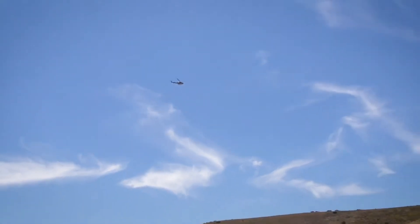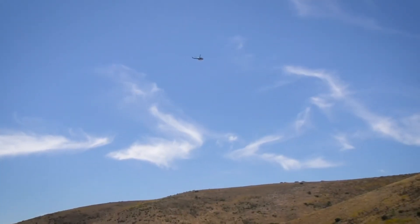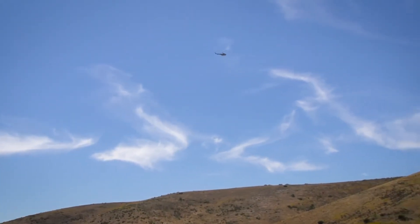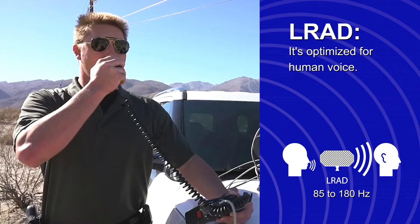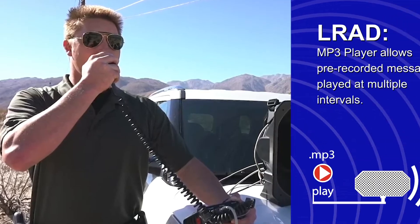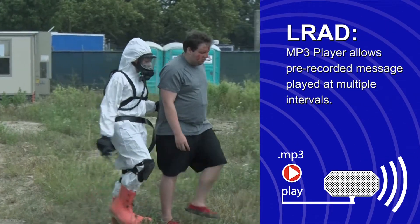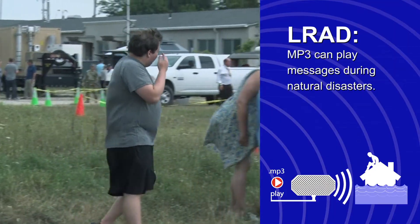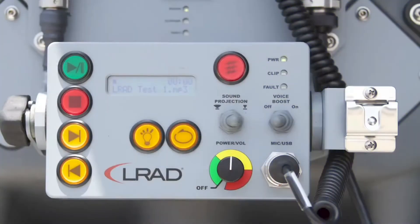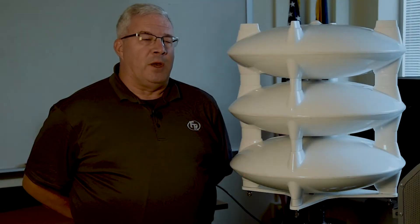The LRAD can be used to hail and notify at great distances using live or pre-recorded sounds or voice messages. It's optimized for human voice, so you can pre-record messages that you want to transmit to people, whether it be in a disaster area, crowd control, or in an event where you want to tell people what to do, where to go, and how to respond.